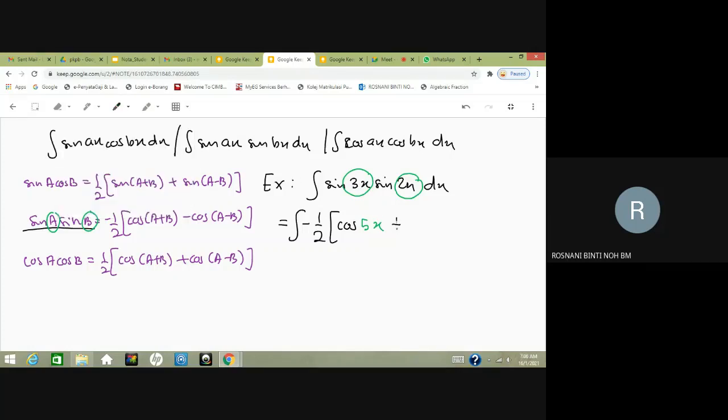...minus cos(A - B). So A minus B is 3x minus 2x which equals x, giving us cos x. This is what happens after we use this formula. Then, what do we need to do?